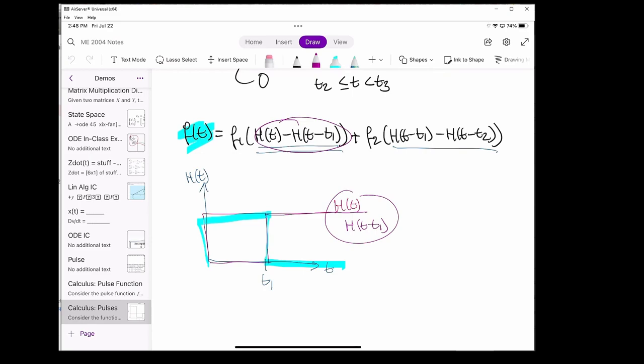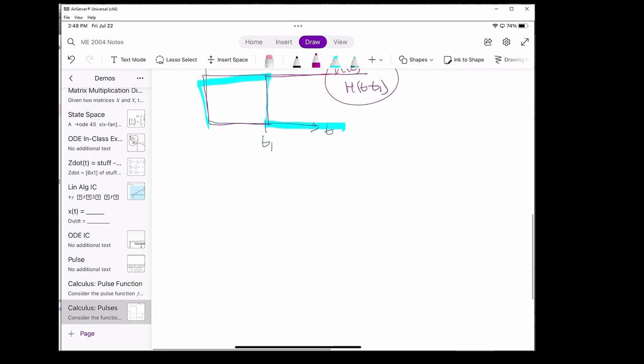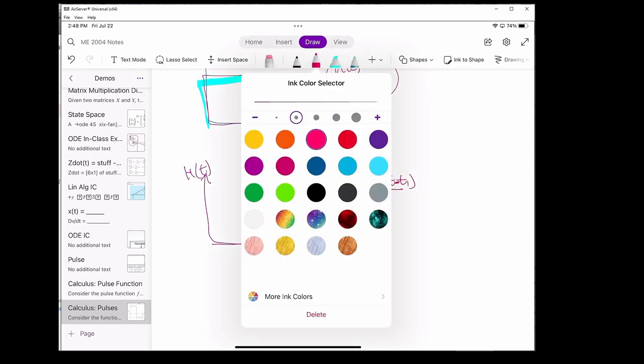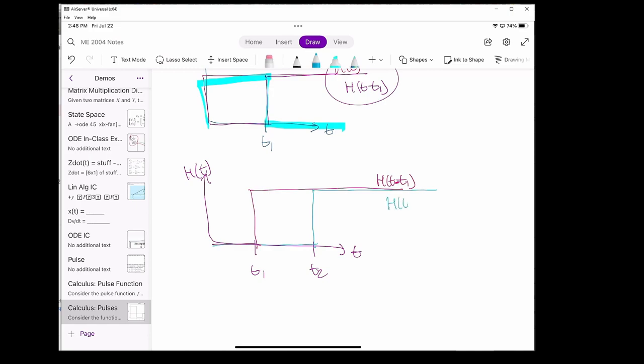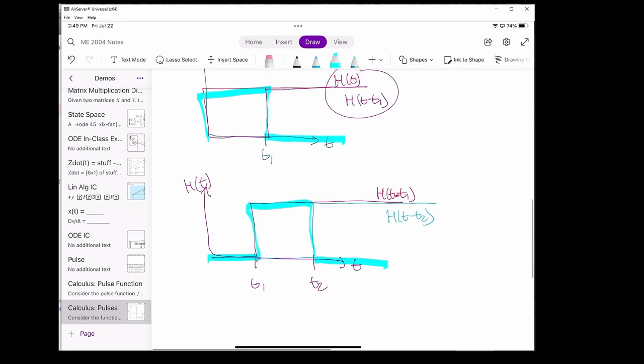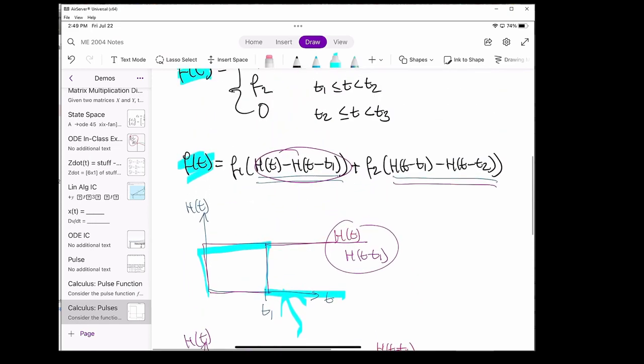We can do a similar thing with this function over here. When we subtract these two functions from each other, we're left with a similar-looking rectangular plot. This, in essence, does the same thing as that, but now the function is active from t1 to t2 instead of 0 to t1. I hope this statement makes a lot more sense now.